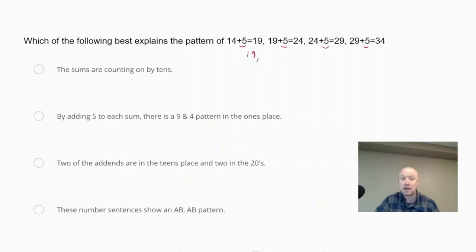So the arithmetic sequence would be 19, 24, 29, and 34. The first choice says the sums are counting on by 10. So that is incorrect. It's not going up by 10s.